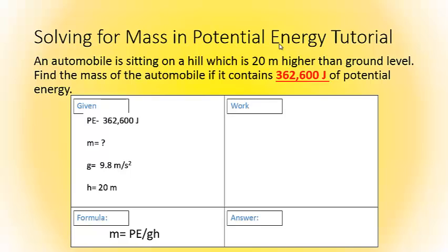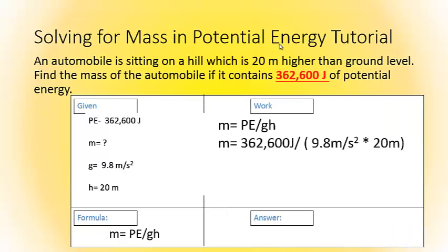So, now that we got our formula, we plug it into our formula box. We substitute our numbers. The first thing we're going to do is multiply according to our order of operations. So, 9.8 meters per second squared times 20 meters. We're going to get 196.